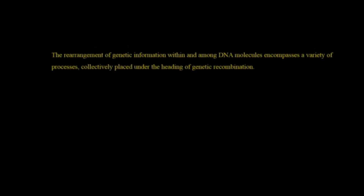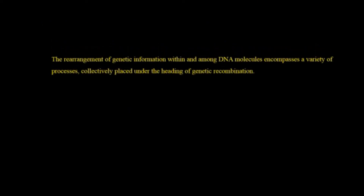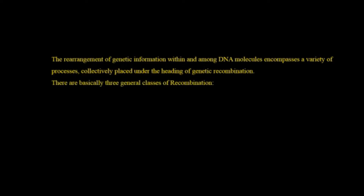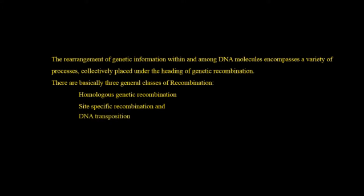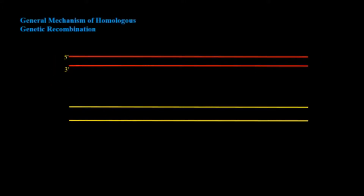Let's start. The rearrangement of genetic information within and among DNA molecules encompasses a variety of processes collectively placed under the heading of genetic recombination. There are basically three general classes of recombination: one is homologous genetic recombination, second is site-specific recombination, and the last one is DNA transposition.